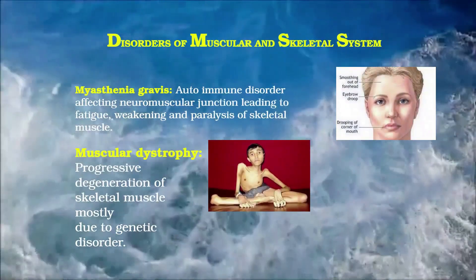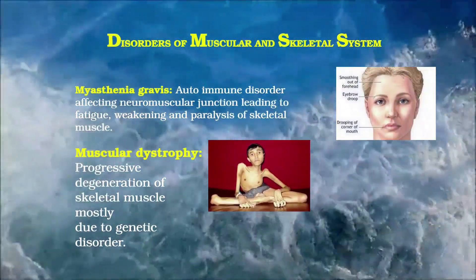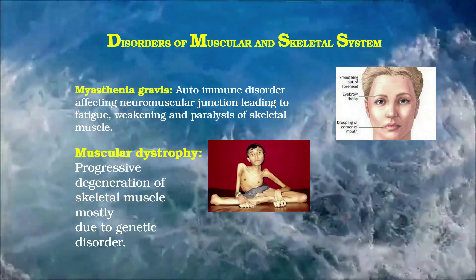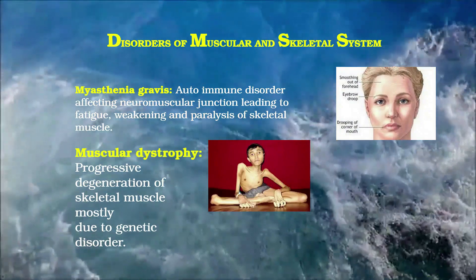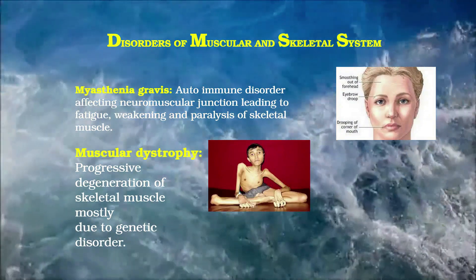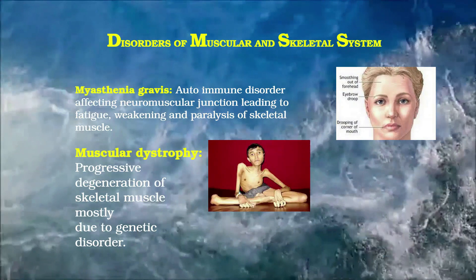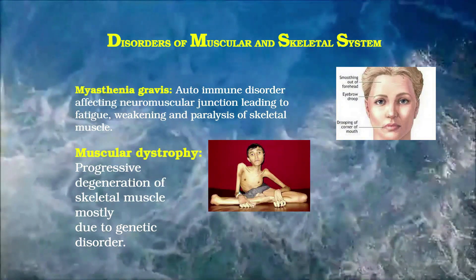We can study about disorders of the muscular and skeletal system in humans. 1. Myasthenia gravis: It is an autoimmune disorder affecting the neuromuscular junction, leading to fatigue, weakening, and paralysis of skeletal muscle. 2. Muscular dystrophy: It is characterized by progressive degeneration of skeletal muscle, mostly due to genetic disorder.